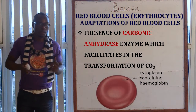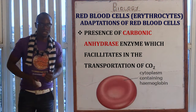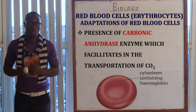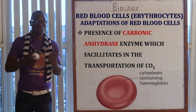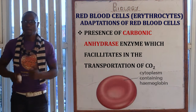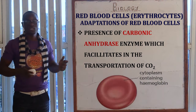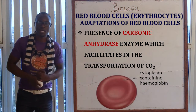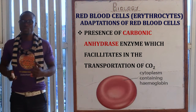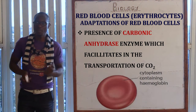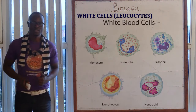The red blood cell also contains carbonic anhydrase enzyme, which mainly facilitates the transportation of carbon dioxide. Never make the mistake of saying that hemoglobin transports carbon dioxide — hemoglobin is only responsible for the transportation and absorption of oxygen, while carbonic anhydrase is only responsible for the attraction and absorption of carbon dioxide gases in the blood.